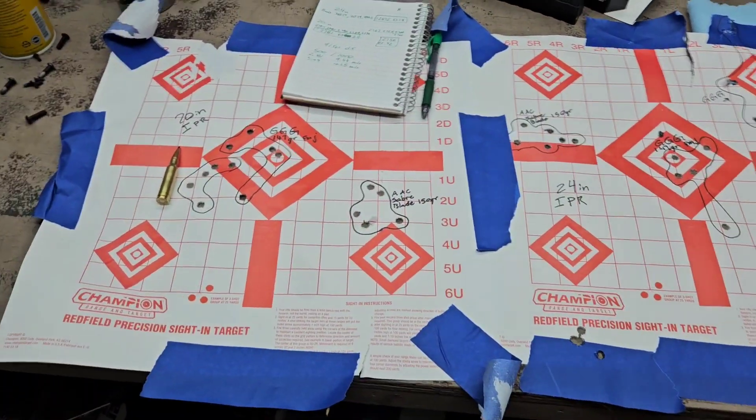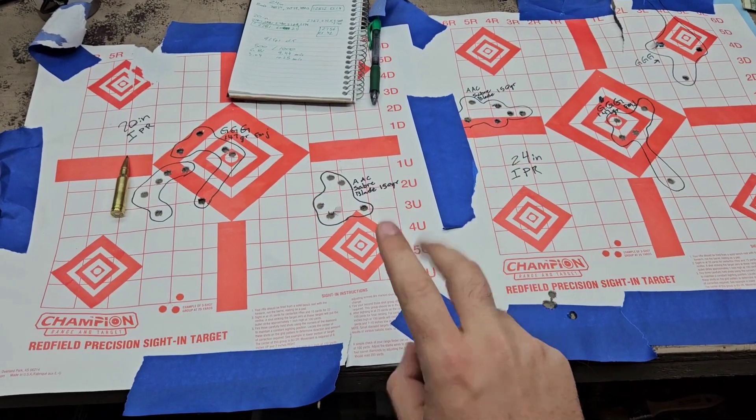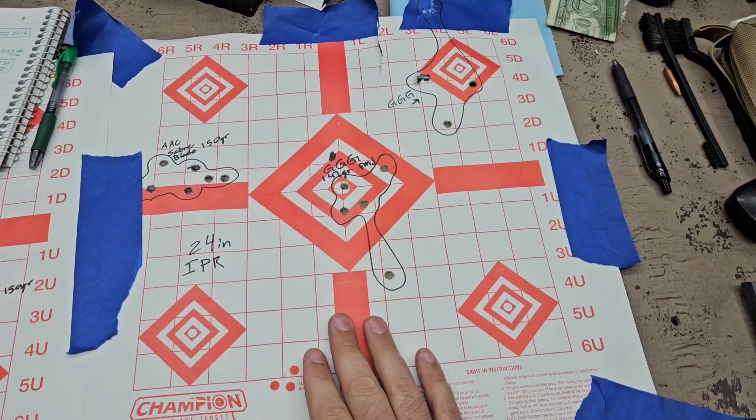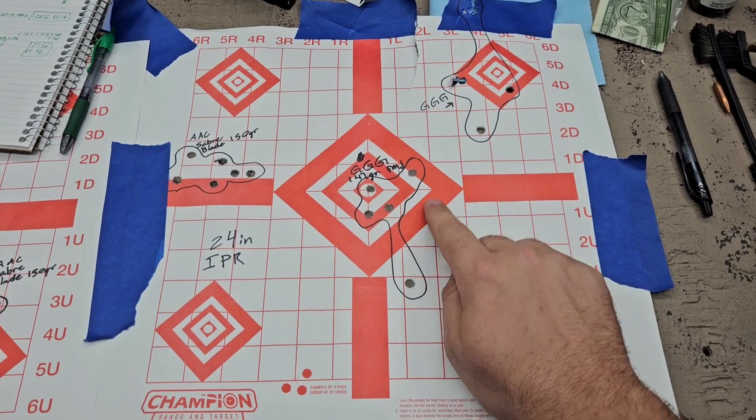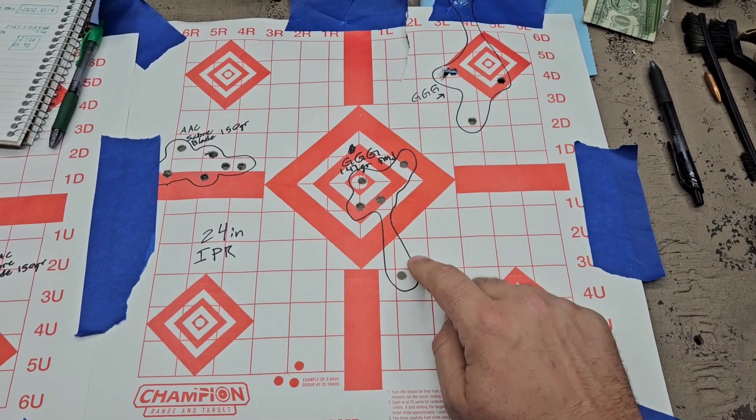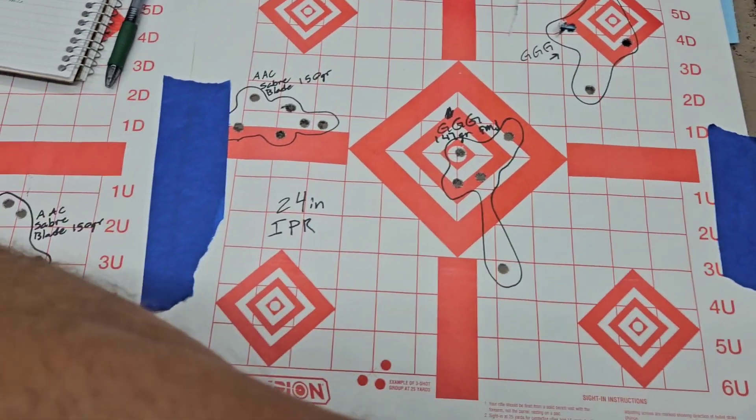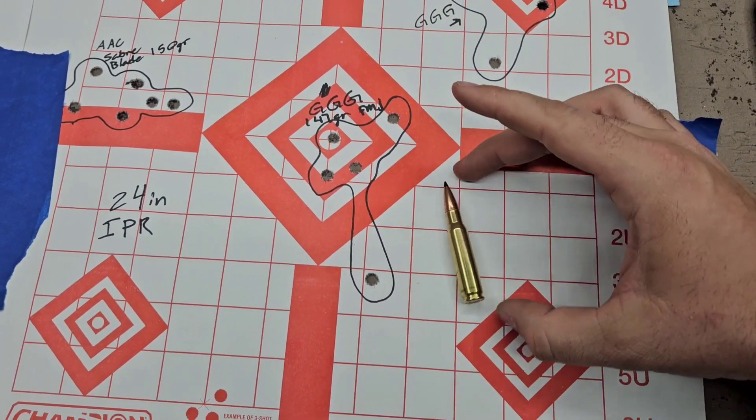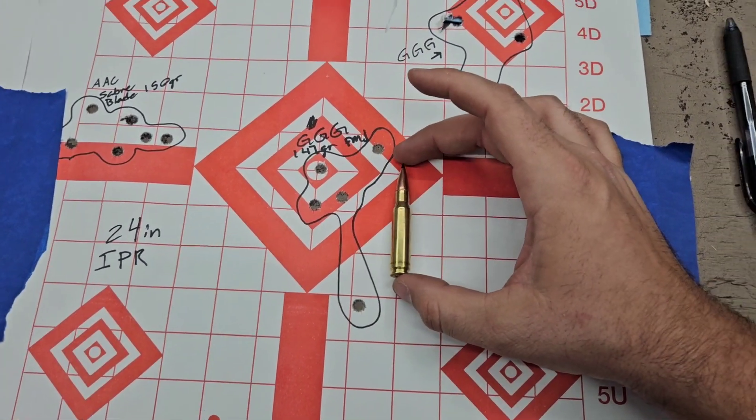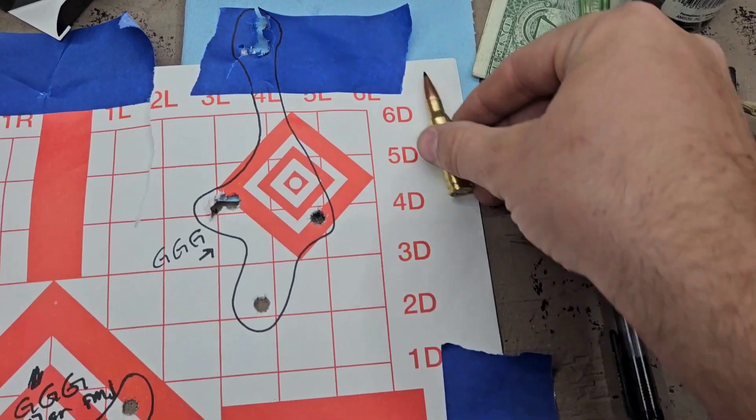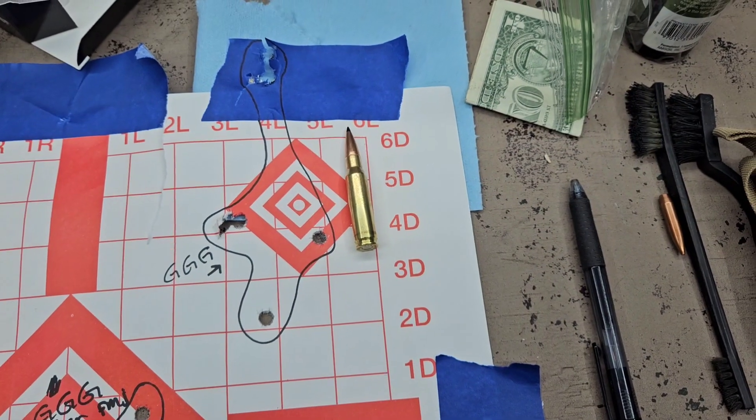A lot going on. Not really all that much, but two targets, two different guns. We started off with the 24-inch IPR. Here was the first group of the GG&G, not good at all. Here is a 308 for reference. That's a pretty massive group. Second group was over here, same deal, pretty massive.